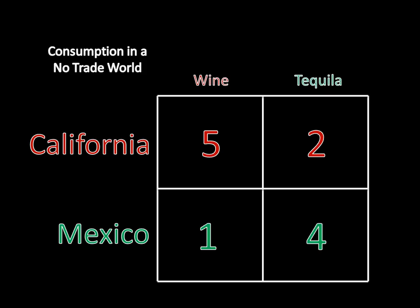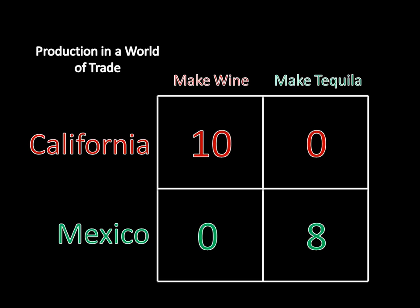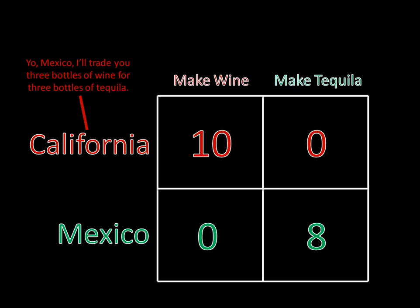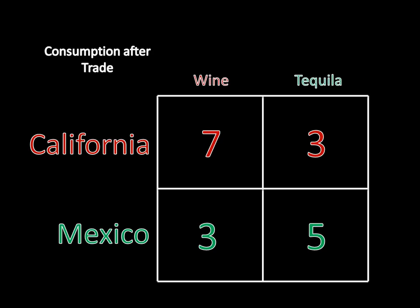Now let's have the states specialize in what they're good at and allow for trade. Instead of California making five bottles of wine and two bottles of tequila, California is just going to make all wine. And instead of Mexico making one bottle of wine and four bottles of tequila, it's just going to make all tequila. If they do that, California is making 10 bottles of wine and no tequila, while Mexico is making no wine and eight bottles of tequila. California could say: I'll trade you three bottles of wine for three bottles of tequila. Mexico would agree. After that trade, California will be consuming seven bottles of wine and three bottles of tequila — it traded three bottles of wine to Mexico and got three bottles of tequila in return. And Mexico is consuming three bottles of wine and five bottles of tequila.